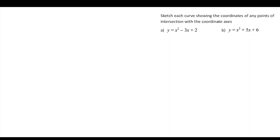In this question, we've been asked to sketch each curve, showing the coordinates of any points of intersection with the coordinate axes. The coordinate axes we're referring to are the x-axis and the y-axis. We're looking for anywhere where the sketch is going to cross over those two axes.